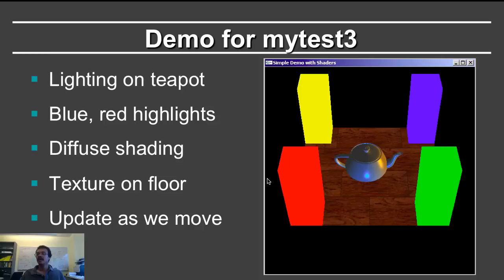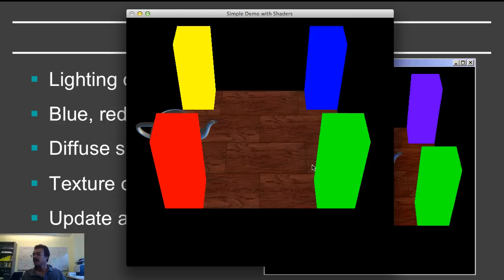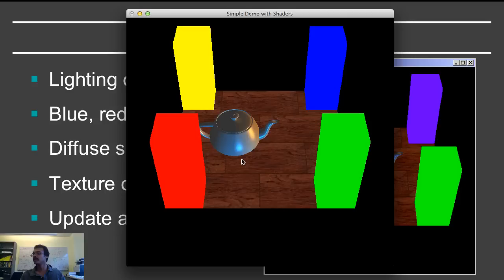Let me also go back to the demo for myTest3. As I bring up the demo, pay attention to these different aspects. You'll notice that the teapot has lighting on it — it has red and blue highlights. Also notice the diffuse shading: where you don't see the red and blue highlights, the teapot is still lit and still shaded. You'll notice that the floor has a wood texture on it, and the shading updates as you move around. The teapot is animating, and you can see those highlights changing location as it moves, along with the general diffuse shading where highlights are absent.